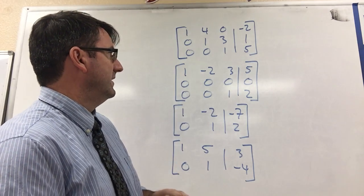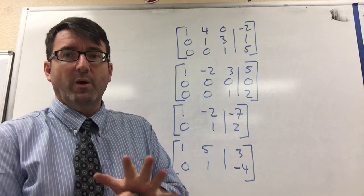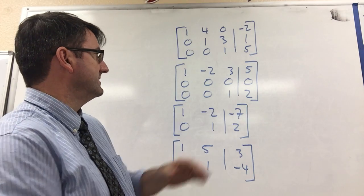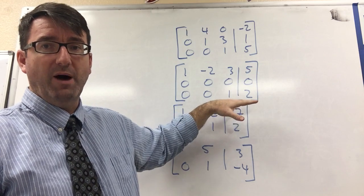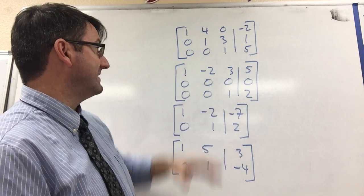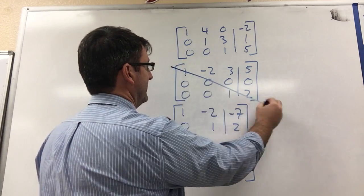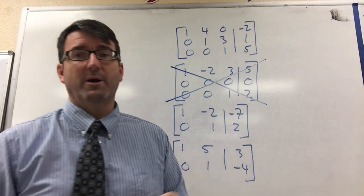On this one, remember that one of the conditions was that if you had a row of all zeros, it had to be on the very bottom of the matrix. And that's not the case here. So this one is not in row echelon form.